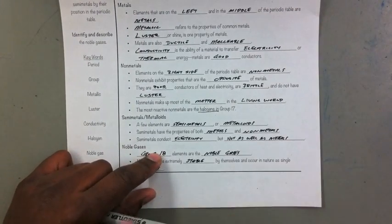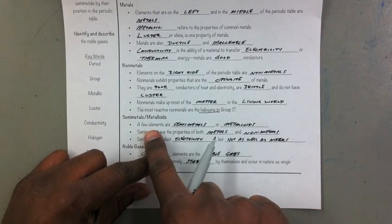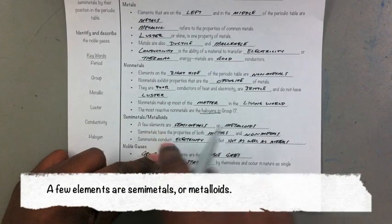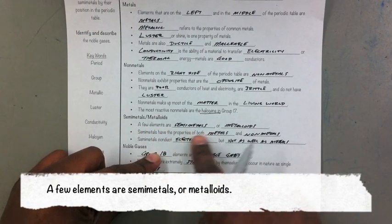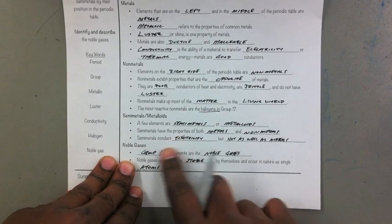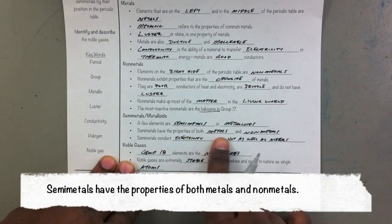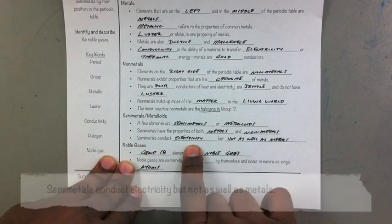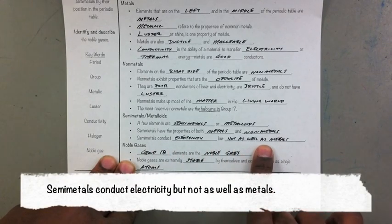The semi-metals, or the metalloids as they're sometimes called, are smaller in number. A few of them are contained on the right side of the periodic table as well. They have properties of both metals and non-metals. Semi-metals conduct electricity, but not as well as metals.